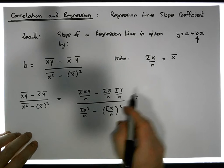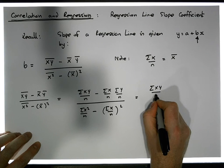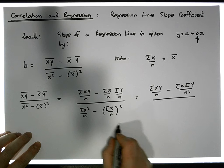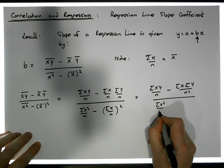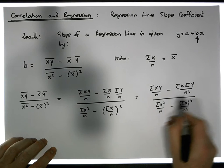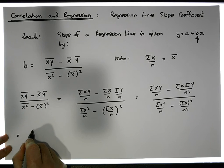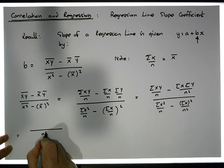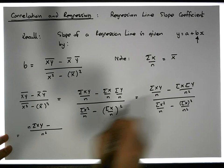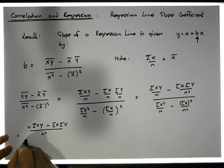What we end up with is a common denominator of n-squared. So the numerator becomes: the sum of the xy's over n, minus the sum of the x's times the sum of the y's over n-squared — because n times n gives us n-squared. And over here in the denominator, we have the sum of the x-squareds over n, minus the sum of the x's all squared, over n-squared. There's a common denominator of n-squared in both the numerator and denominator.